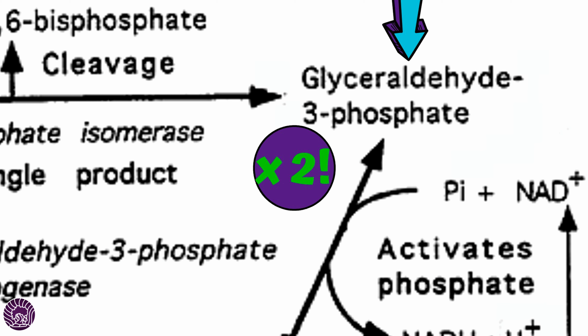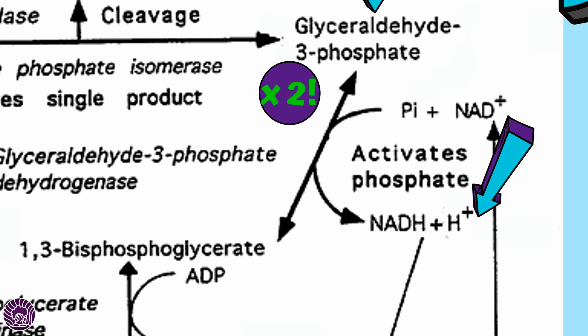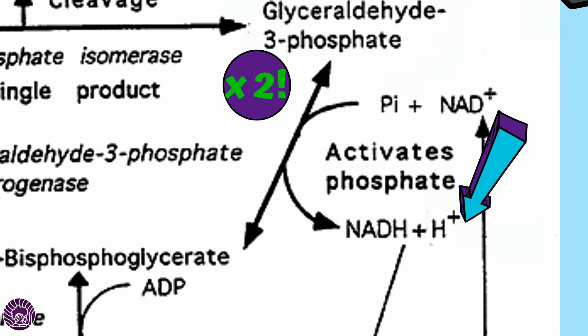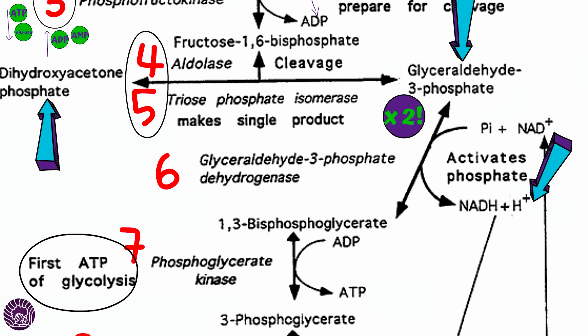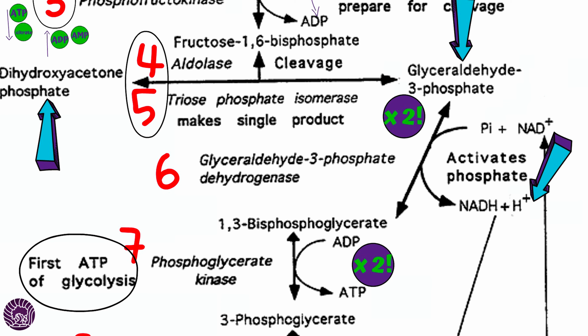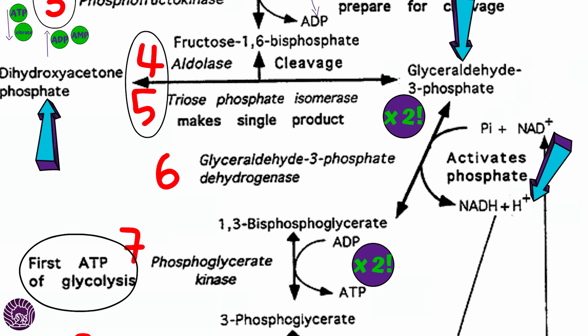When our ATP levels are high, this step of glycolysis slows down, which slows down the whole system. When citrate levels are high — indicating that the aerobic energy system is working at a high rate — this stage of glycolysis will also slow down. Similarly, when we have high ADP concentrations and high AMP (adenosine monophosphate) concentrations, this step speeds up, so the whole process of glycolysis speeds up and provides us with more energy. Step three is crucial — it's a rate-limiting reaction that helps to control and match the rate of glycolysis to our energy demands.